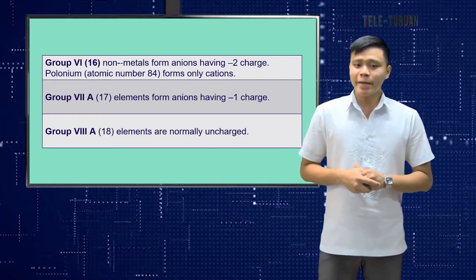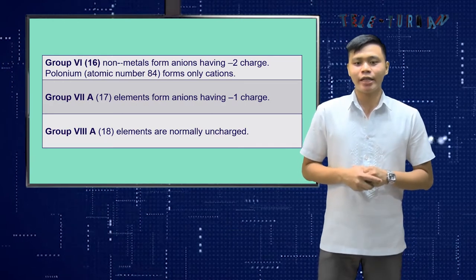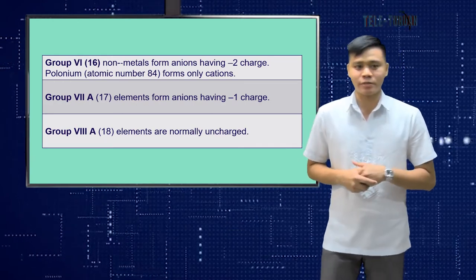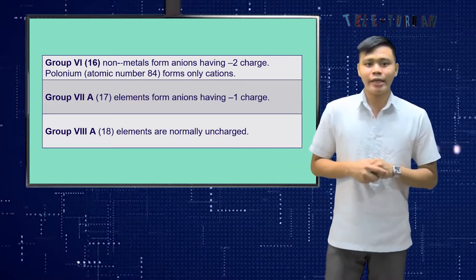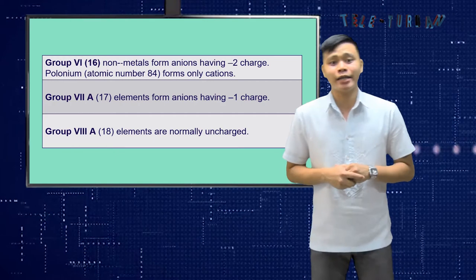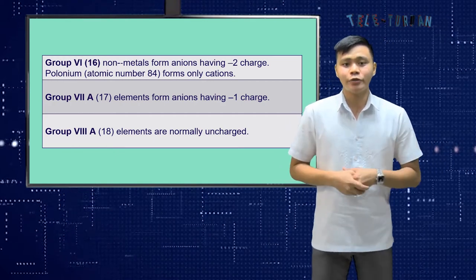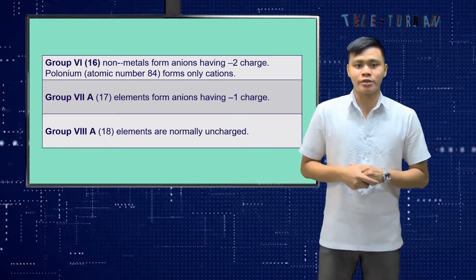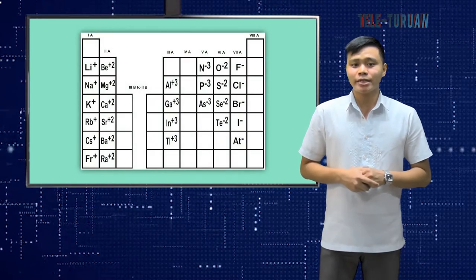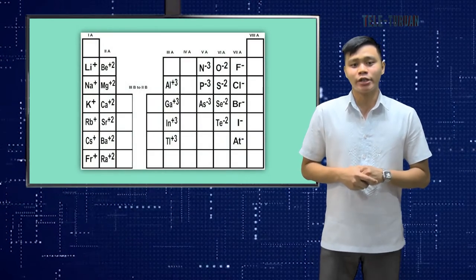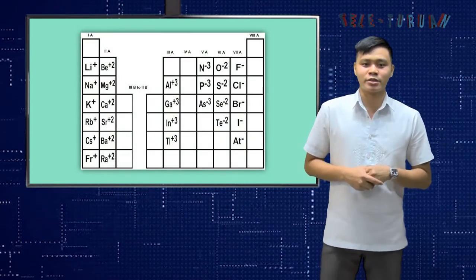Group 7A elements form anions having a −1 charge. Group 8A elements are normally uncharged. This table summarizes the typical charges on anions and cations.